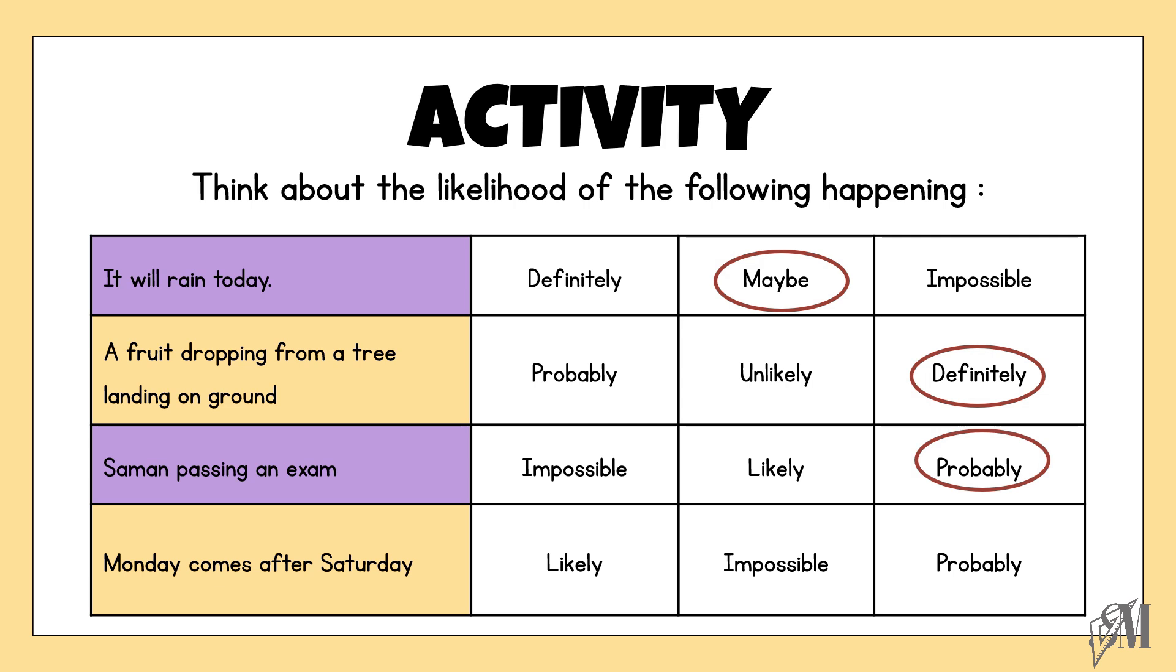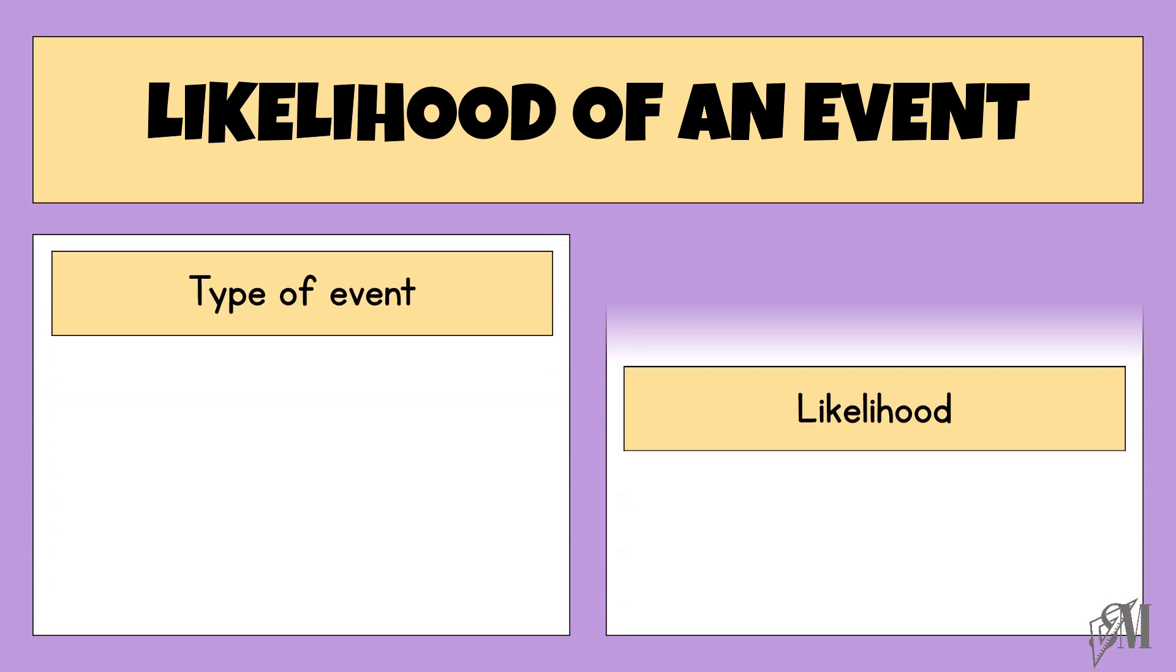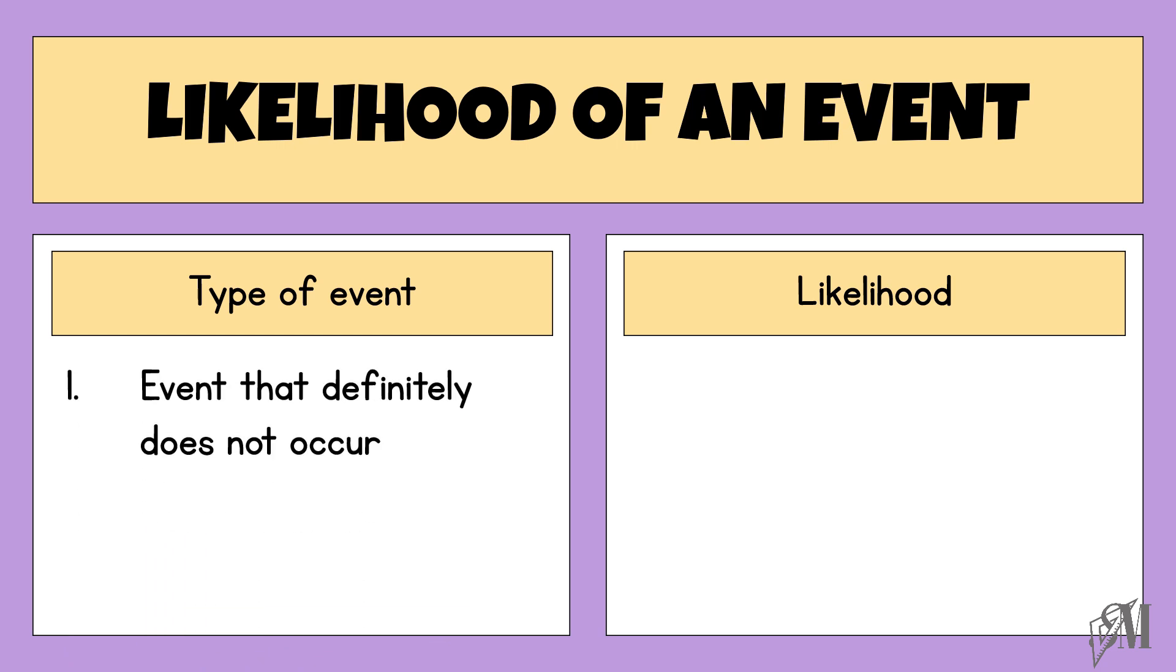Then the last one is Monday coming after Saturday. We know Monday always comes after Sunday, so this is an impossible event. Now let us study the likelihood of an event. An event that definitely does not occur has the likelihood 0. For an event that will definitely occur, we give 1. For random events, the likelihood lies between 0 and 1.